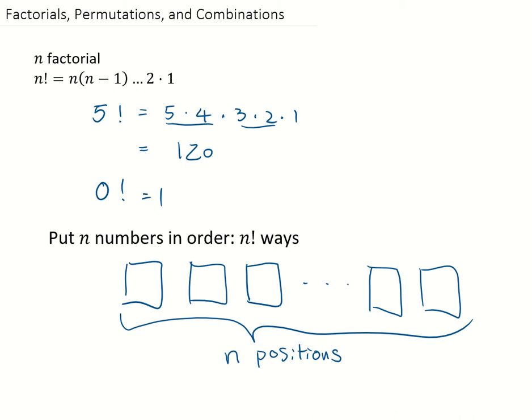This can be explained by using the multiplication principle for counting. If we put n numbers in order, that means we have n positions. For the first position, we have n choices. For the second position, since 1 is taken, we have n minus 1 choices. The next position, we have n minus 2 choices.